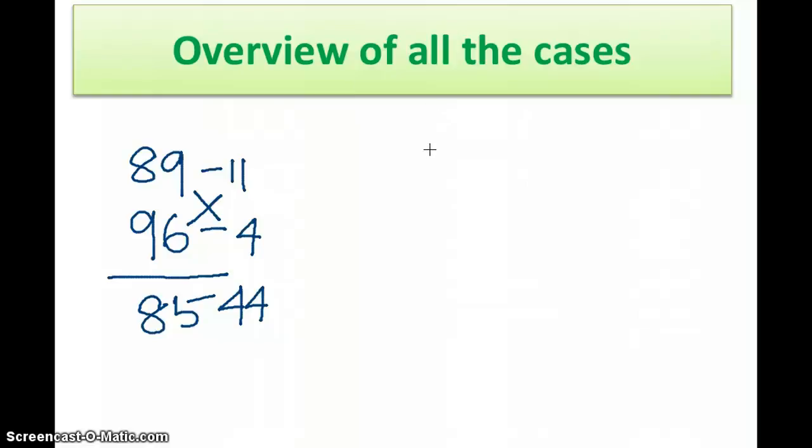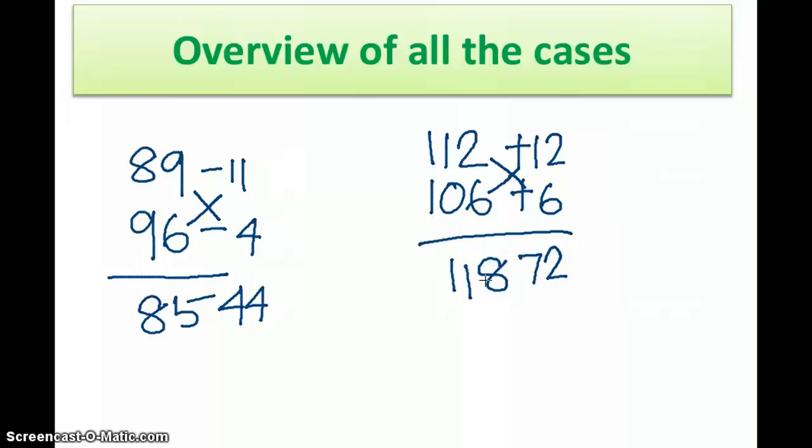Now let's consider the case where both numbers are more than 100. For example, 112 and 106. 112 is 12 more and 106 is 6 more. We multiply the right side, 12 into 6, that gives 72. Then we do a cross addition, 112 plus 6 or 106 plus 12. Whatever we do, we get 118. So the answer is 11872.